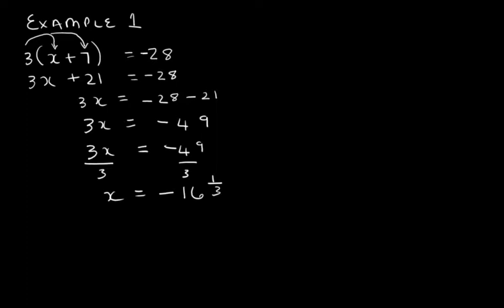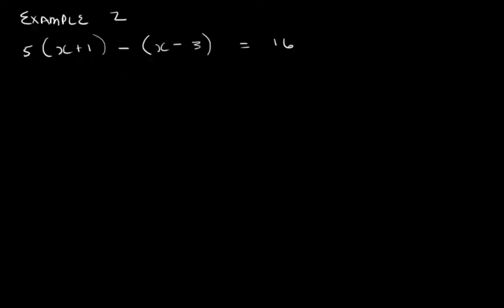Let's look at example two. So here we have 5(x+1) - (x-3) = 16. Now again, we need to get rid of the brackets.